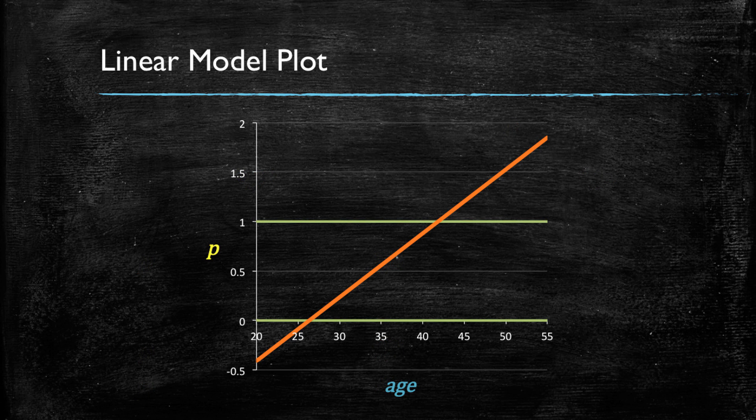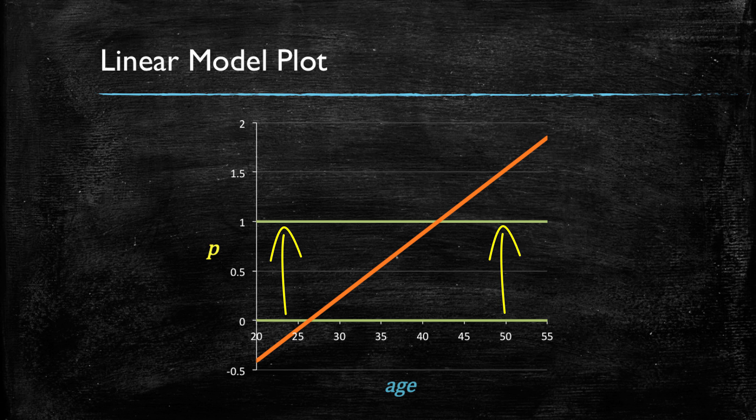This becomes more clear if we plot what we are having. In this plot, you observe the bounds of probabilities that should go from 0 to 1. And note that when customers are young, say below 26 years of age or so, the estimated probabilities are negative.